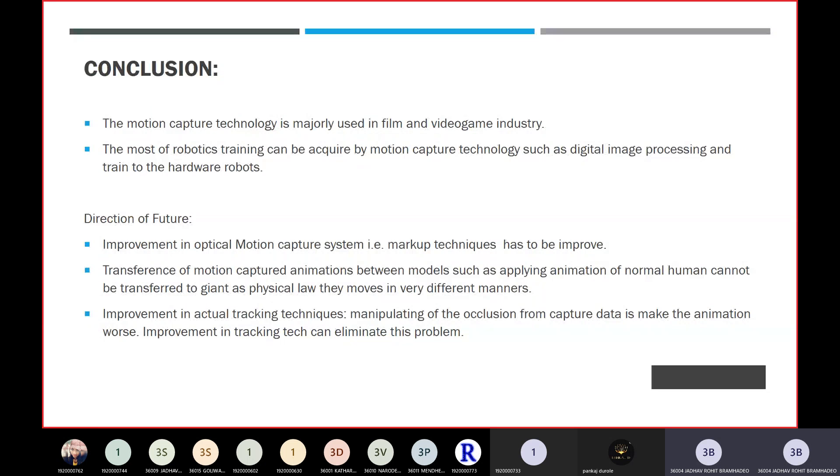Improvement in actual tracking techniques is needed. Manipulating operations from captured data is making the animation worse. Improvement in tracking can eliminate this problem. As I said previously, if outside is rainy and we want to capture motion, the expression sometimes has occlusion, like rain causing occlusion in the expression. Motion capture does not capture it perfectly, so innovation has to be improved for that particular situation.